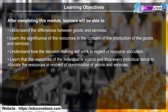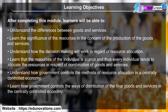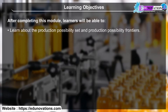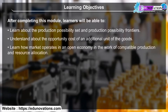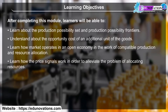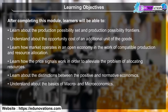Every individual tends to allocate resources in respect of a combination of goods and services. Understand how government controls the methods of resource allocation in a centrally controlled economy, and the ways of distribution of final goods and services. Learn about the production possibility set and production possibility frontiers, opportunity cost, how markets operate in an open economy, how price signals work in allocating resources, and the distinctions between positive and normative economics, as well as the basics of macro and microeconomics.